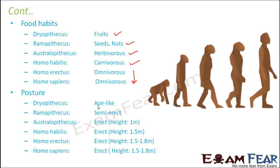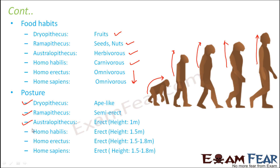The third component is posture. Initially they were not erect — the more human they became, the more erect they became. As visible in the picture, posture went from completely bent, to almost erect, to completely erect. Posture was initially ape-like, then semi-erect, then finally fully erect since Australopithecus. Height also gradually increased: initially around 1 meter, then 1.5 meters, then 1.5 to 1.8 meters.